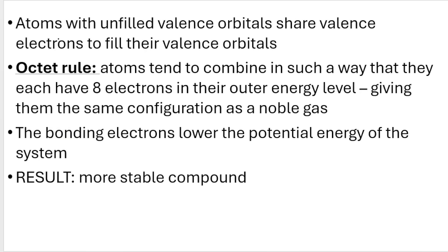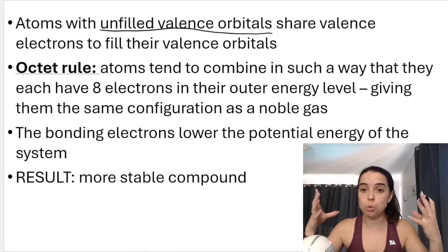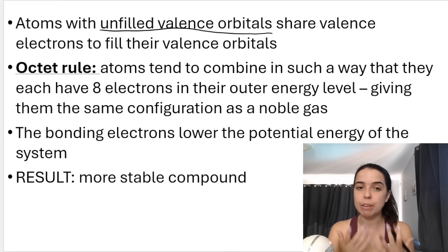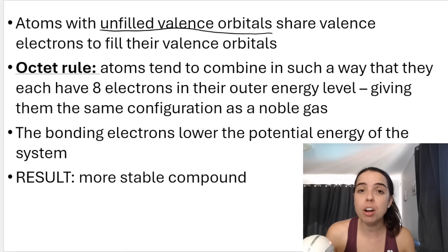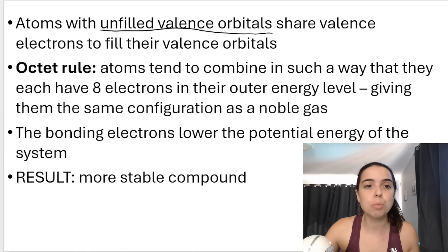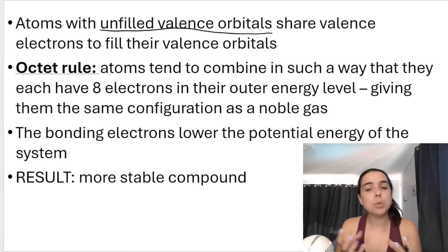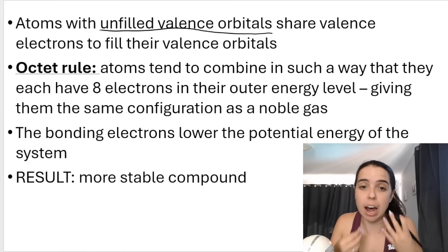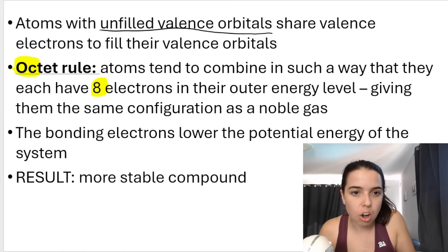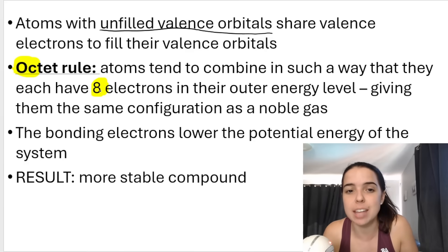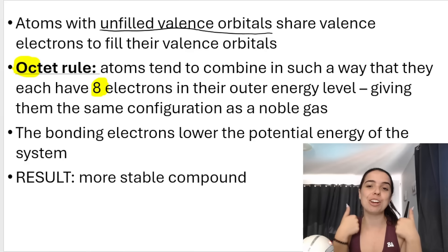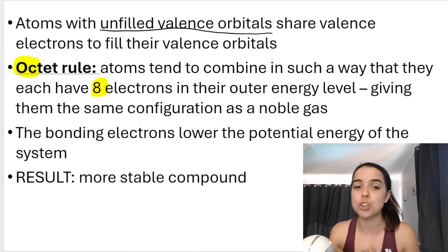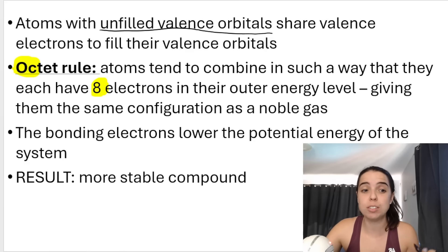Atoms with unfilled valence orbitals share valence electrons with other atoms in order to fill those orbitals. When we draw Lewis dot diagrams we follow the octet rule. The octet rule says that each atom combines with other atoms in such a way that they strive to have eight electrons in their outer energy level — 'oct' like octopus or octagon means eight. If they get eight, they have the same electron configuration as a noble gas, which means they're stable with the lowest possible potential energy.